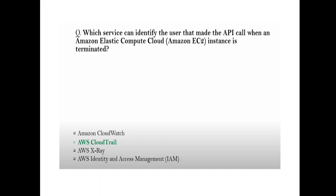Question: Which service can identify the user that made the API call when an Amazon EC2 instance is terminated? Whenever you see 'API,' you must remember CloudTrail.